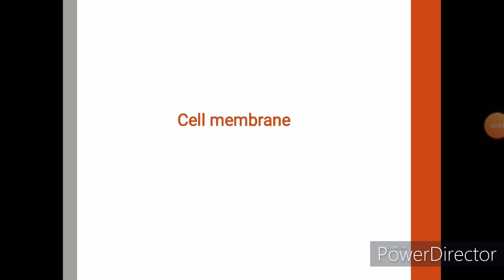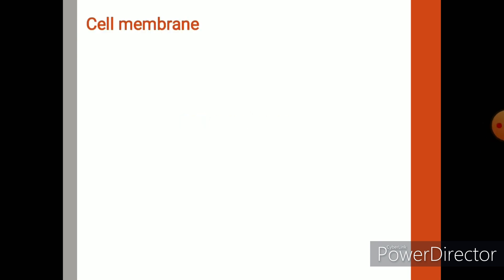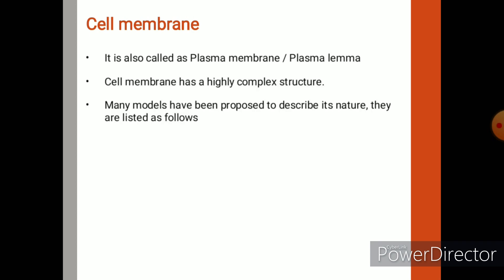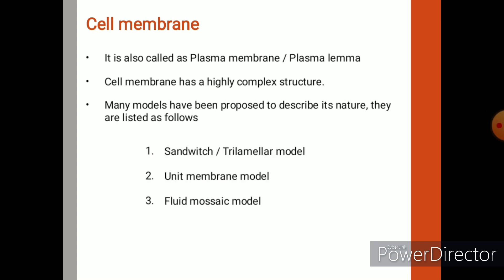Let us know about cell membrane. It is also called as plasma membrane or plasmalemma. It has a highly complex structure. Different models have been proposed to explain the structure of cell membrane: the sandwich or trilamellar model, unit membrane model, and fluid mosaic model.